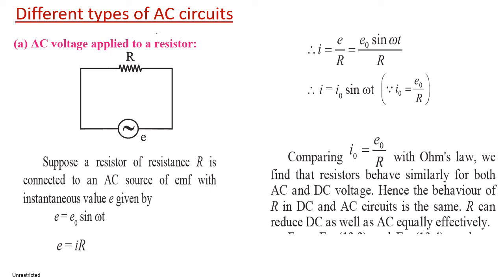Hello everyone. In the earlier video, we discussed about the meaning of alternating current and alternating EMF. We also derived the relationship between the IRMS value and ERMS value, the relation between the RMS values of current and peak value of alternating current, and the relation between the RMS value of voltage and the peak value of voltage. We also discussed about the meaning of the phasor diagram and how it helps us to analyze AC circuits in a simple way.